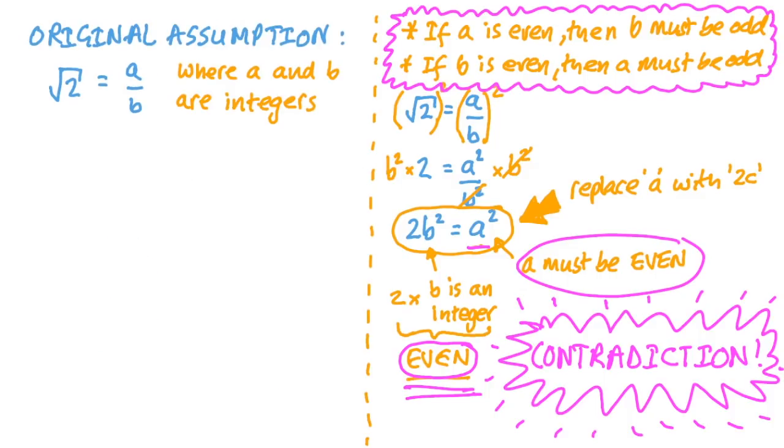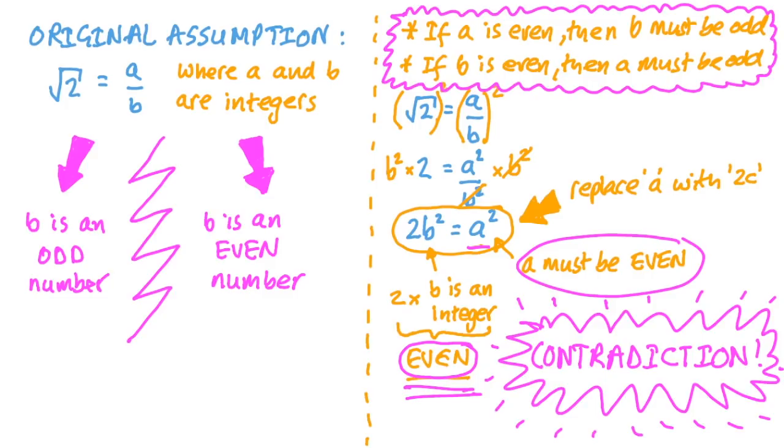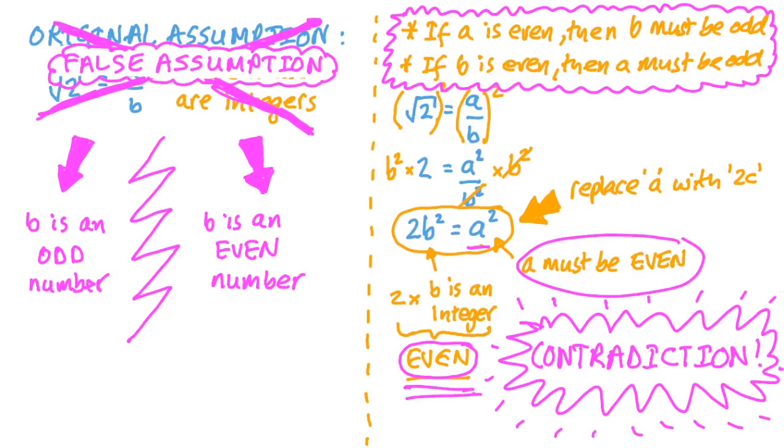This must mean that our original assumption was wrong. We assumed that there are two integers, a and b, that can be used as the numerator and denominator in a fraction in its simplest form, representing the value of the square root of 2. That assumption leads us to two mutually exclusive conclusions. That is, b is an even number and b is an odd number. So the assumption must have been wrong. There aren't two integers, a and b, that can be used as a numerator and denominator in a fraction in its simplest form, representing the value of the square root of 2. We call this sort of proof proof by contradiction. Rather than proving something is true in all cases, we've proved that assuming it's true leads us to a nonsense situation, so it can't be true. It's a pretty powerful technique.